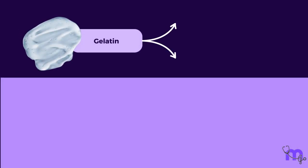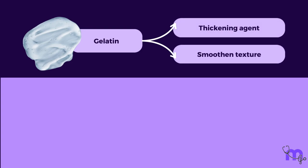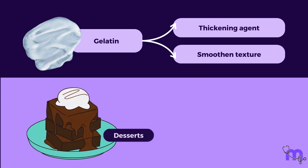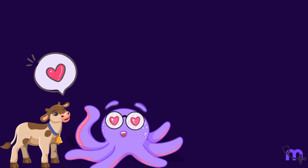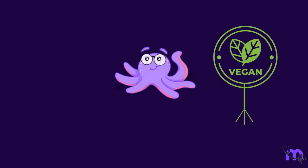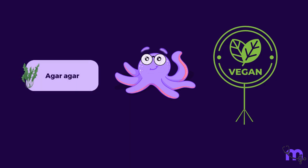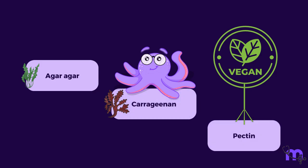Gelatin can form gels, thicken liquids, and provide a smooth texture in foods, so it is used in desserts and candies. But don't worry, animal lovers — there are vegetarian, vegan, and cruelty-free alternatives. The vegan alternative to gelatin is typically made from plant-based sources such as agar-agar, carrageenan, or pectin, which can be used as gelling agents in place of gelatin in a variety of food and cosmetic products.